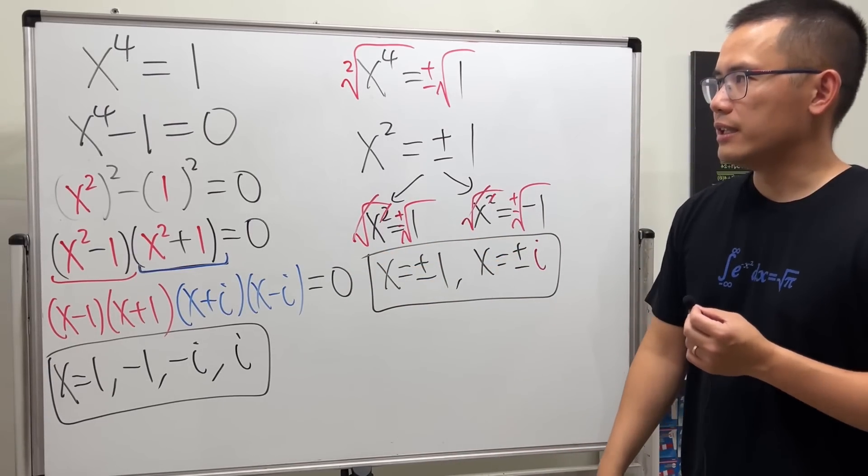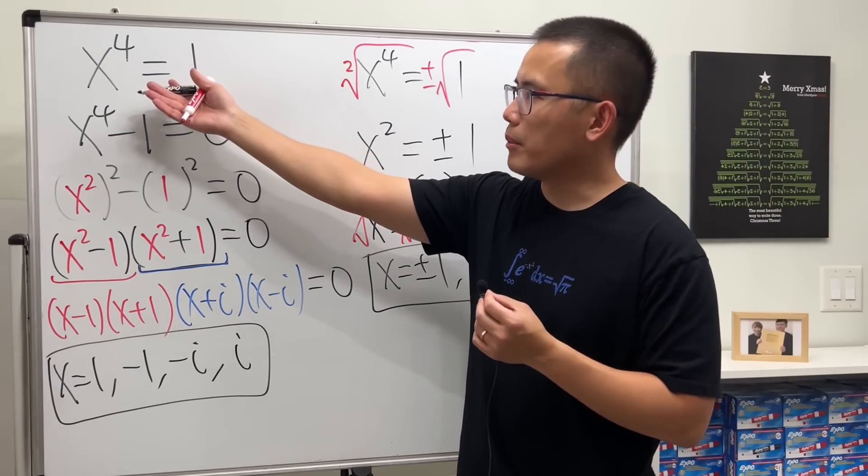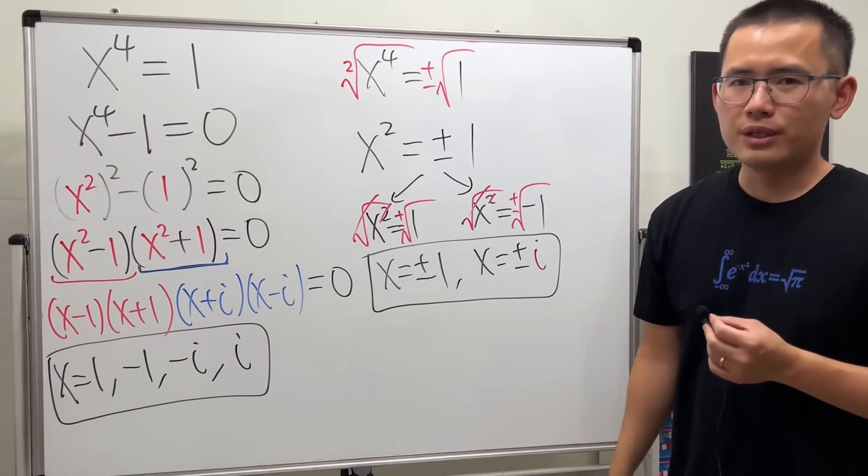There is another way to look at it. You can use the polar form of a complex number. But I'm not going to do that in this video.